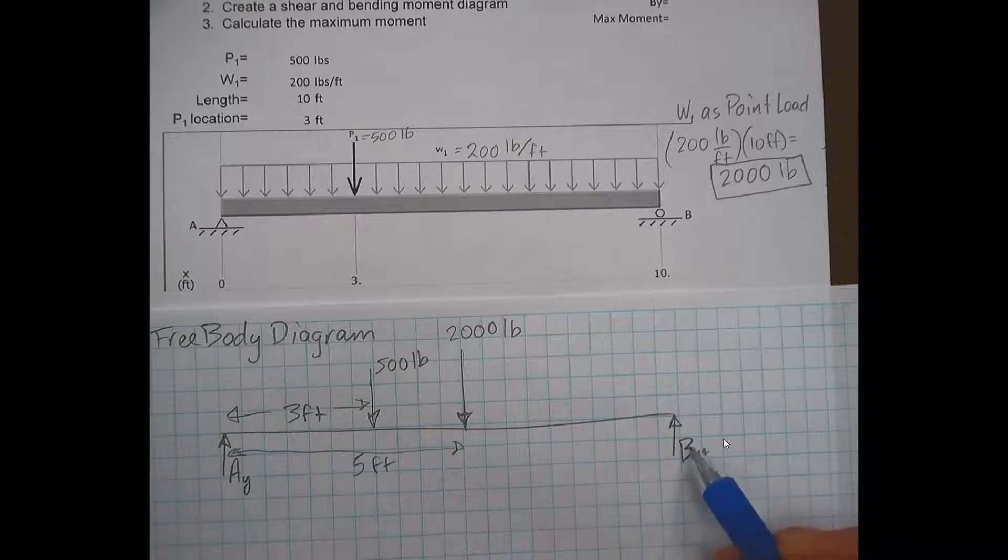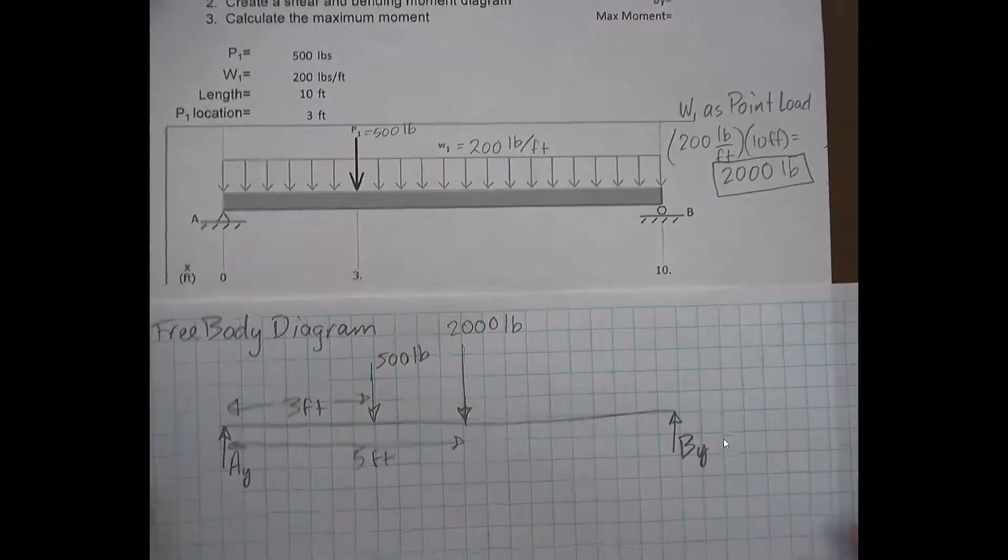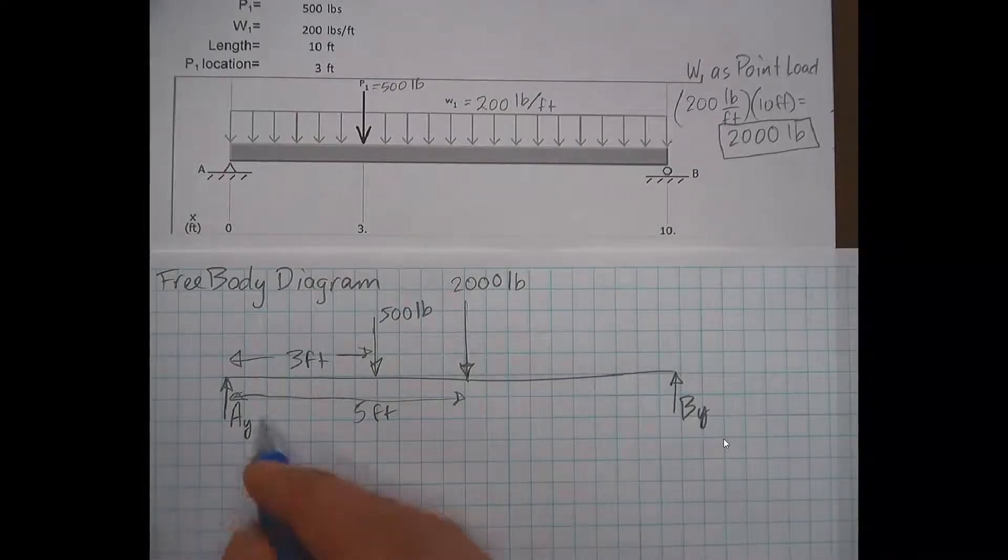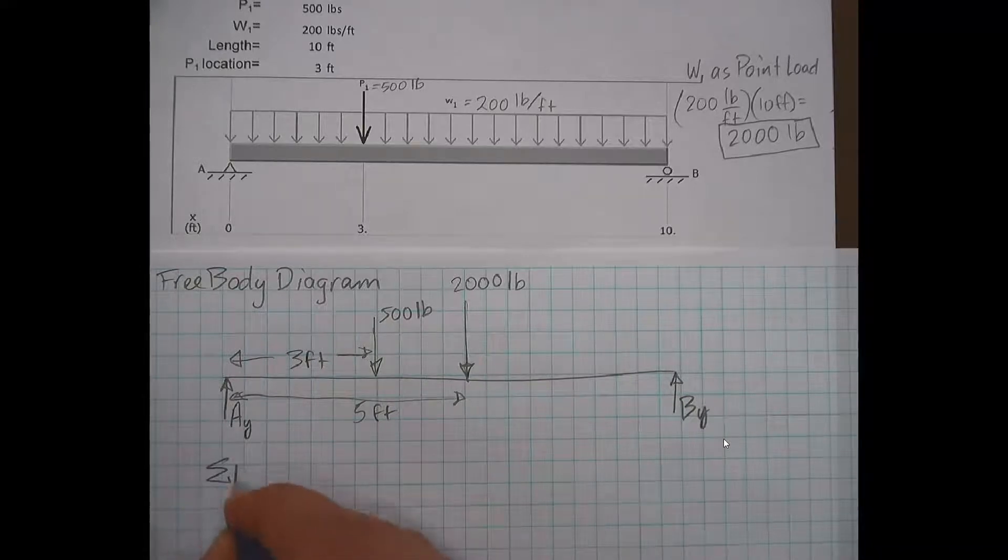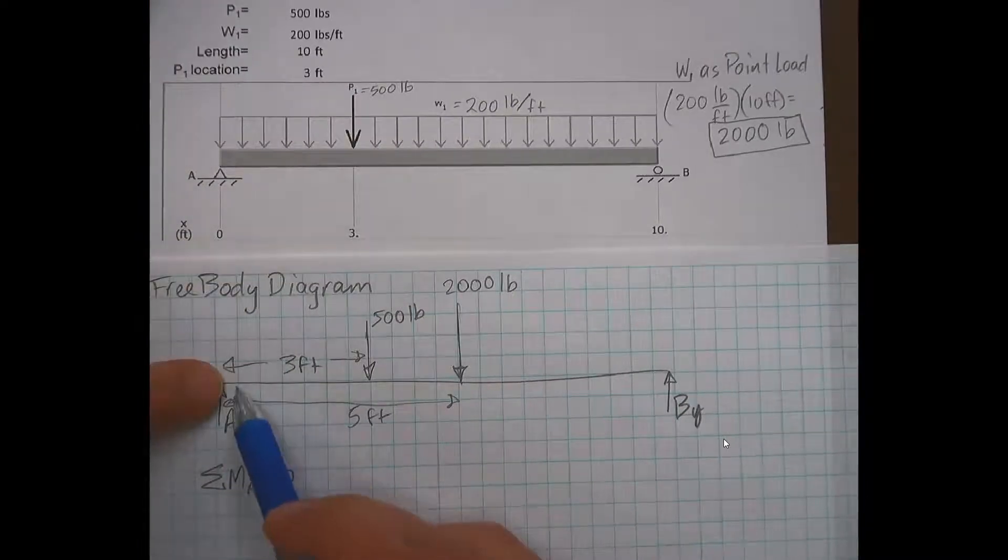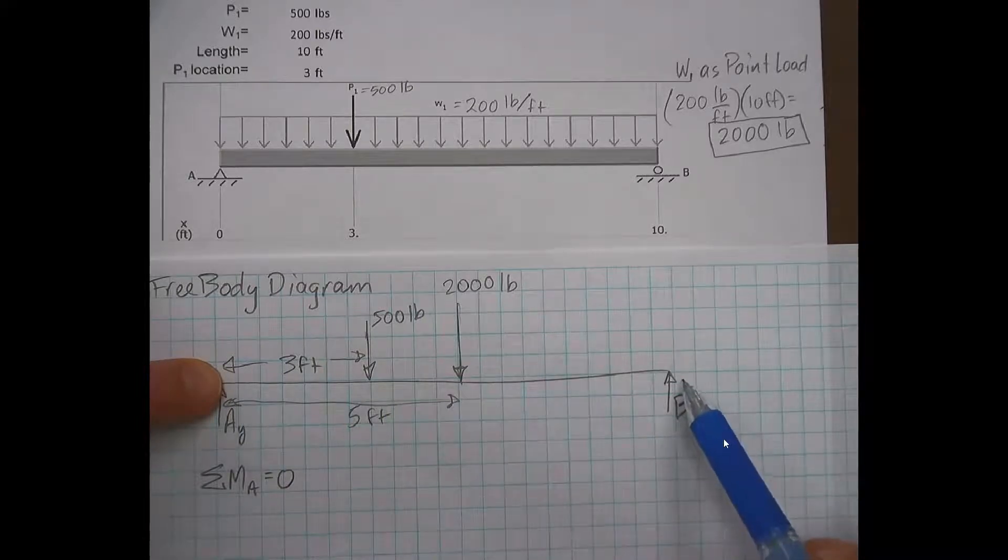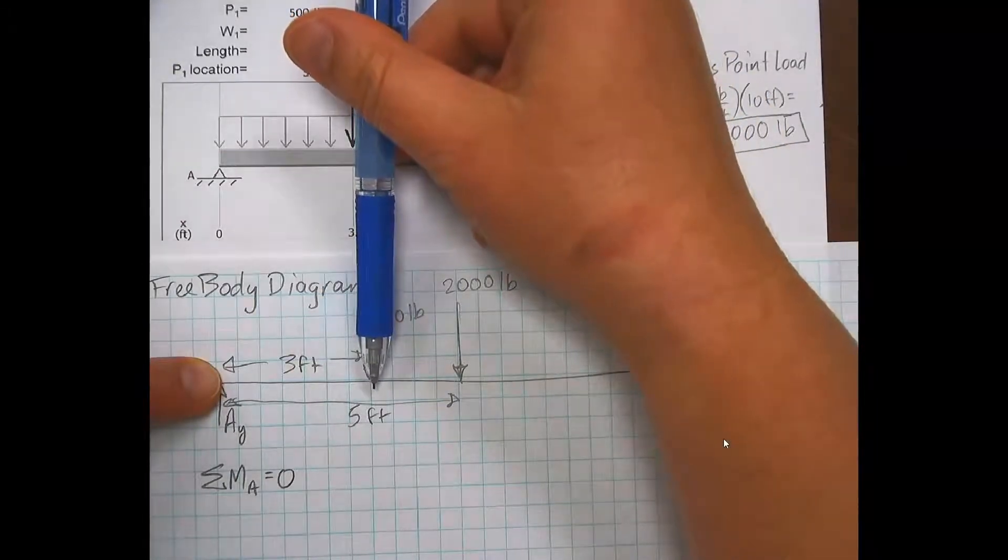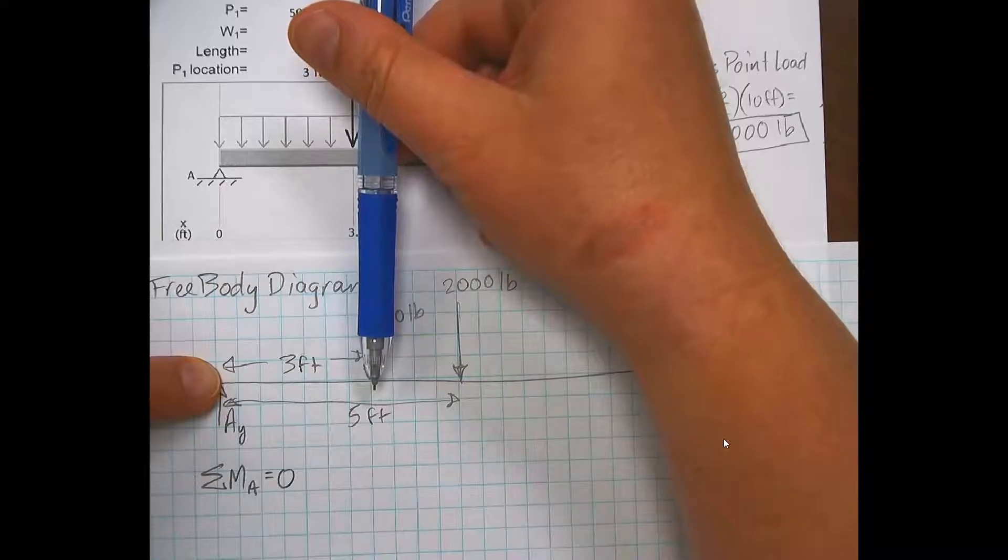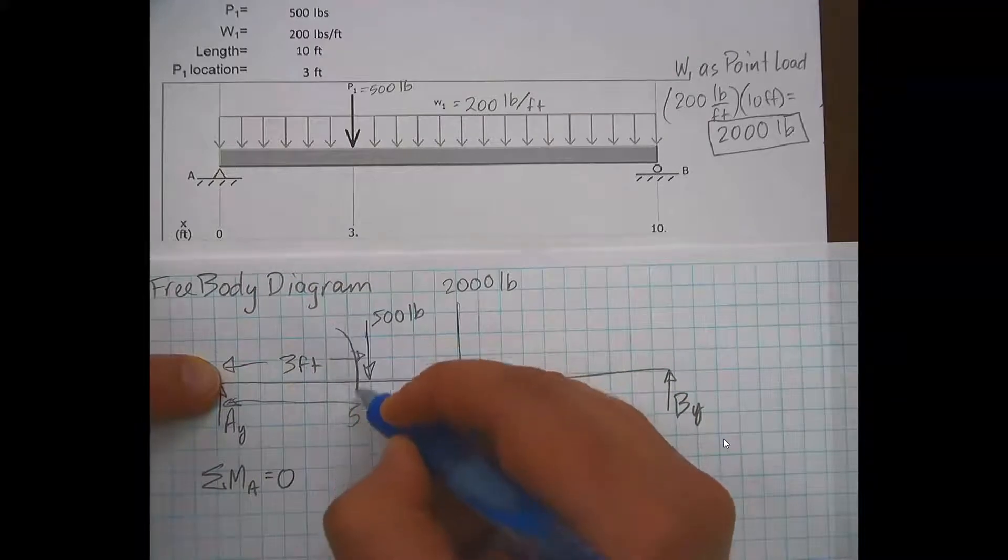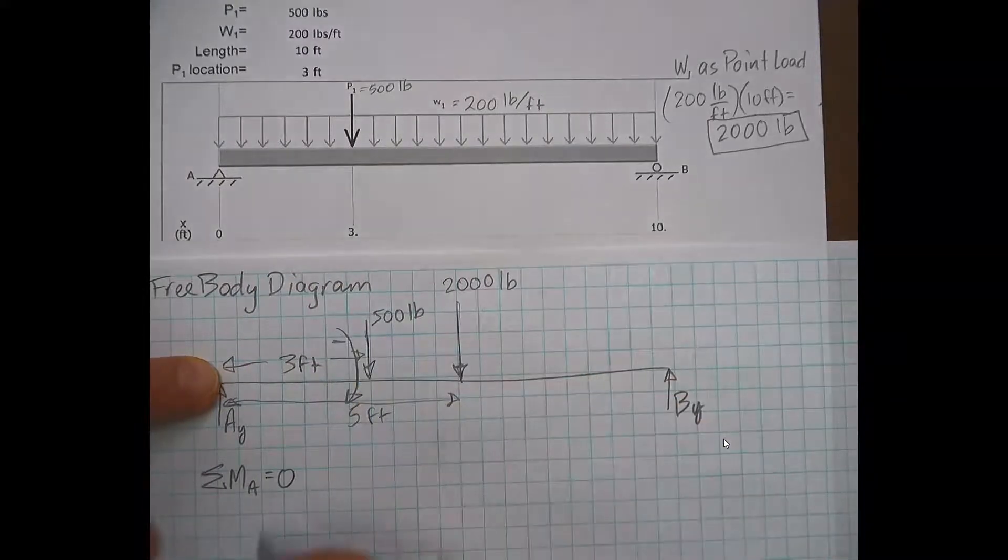In order to solve for our unknown reaction forces, AY and BY, what we're going to do is use the static equilibrium equations. We're going to start off with the sum of the moments about point A. So sum of the moments at point A is equal to zero. We're going to imagine that it was pinned at point A and each of the forces on the beam is going to create a moment about point A. If we look at the 500 pounds, that's going to make the beam want to rotate in a clockwise direction, so that's going to be a negative.